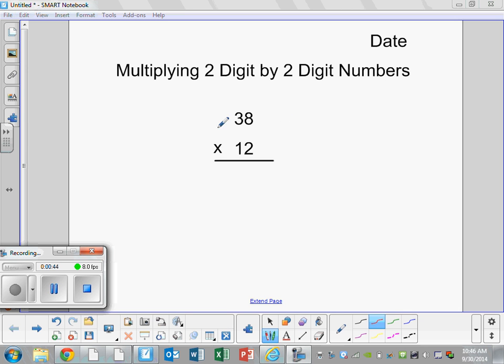Then we're going to start by just talking through a two digit by two digit problem. The first thing that you want to do is you want to make sure your numbers are lined up. You want your place values to be stacked right on top of each other so that you can be sure that you're going to get the correct answer when you start multiplying.